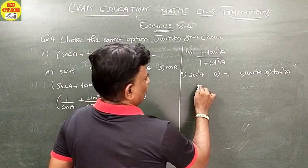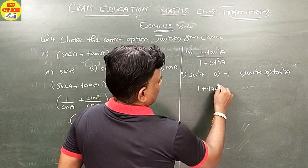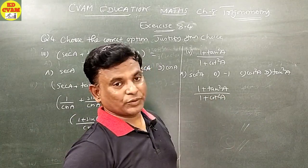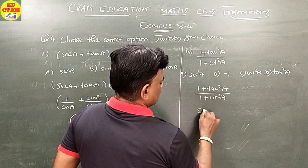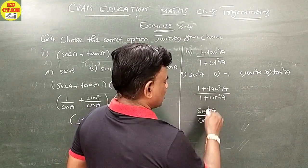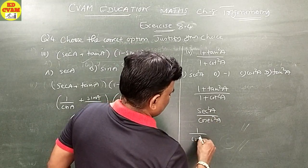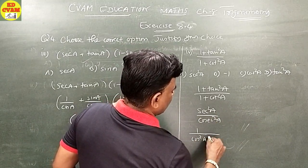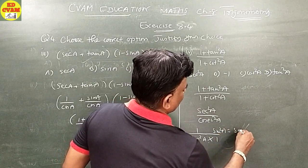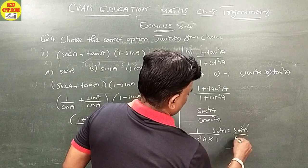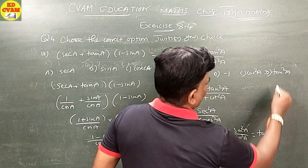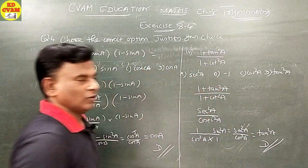Question 4 part 4: (1 plus tan squared A) upon (1 plus cot squared A). One plus tan squared A equals sec squared A, and 1 plus cot squared A equals cosec squared A. Sec squared A equals 1 upon cos squared A, and cosec squared A equals 1 upon sin squared A, so sin squared A goes up. This gives sin squared A upon cos squared A, which is tan squared A. The answer is option D.